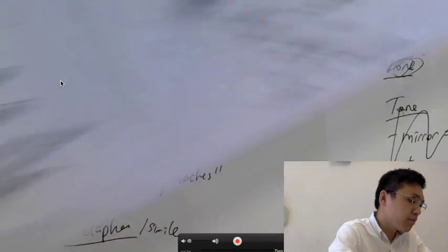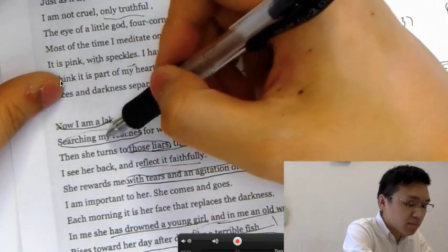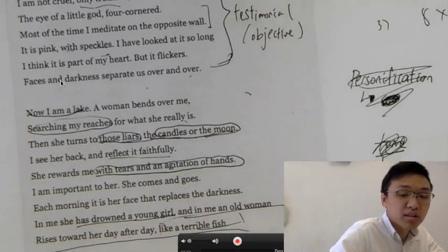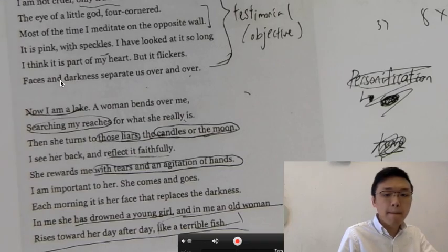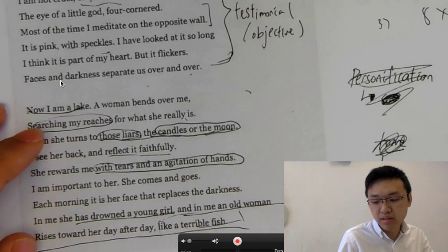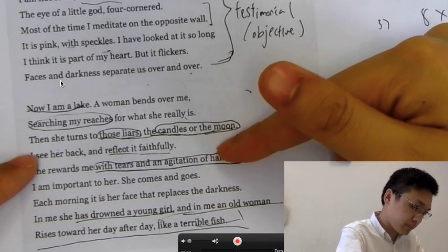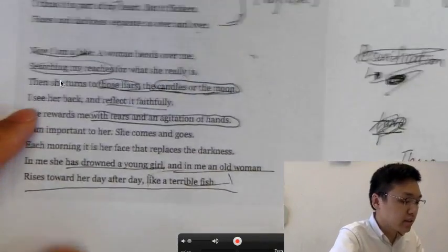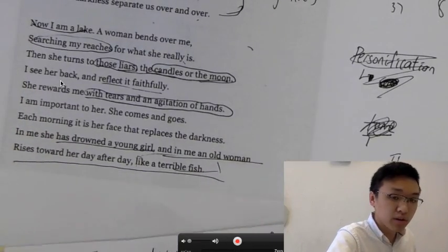So how do I know this? Well, first, it says that the mirror states that the Sylvia Plath is searching my reaches for what she really is. So every day, Sylvia Plath is in front of the mirror trying to figure out how she really looks. She's very concerned about her appearance. And one more thing is every day she rewards me with tears and agitation of hands. So it indicates that every day while she's looking at the mirror, she is crying. She's very upset. So this all shows, indicates the desperation that Sylvia Plath is facing and this contributes to the overall theme.